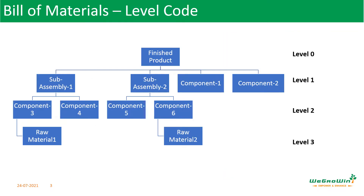We start our discussion with what is the level code in bill of materials. Here we can see that any product starts at level 0. The next level BOM is called level 1 BOM. For example, to produce a finished product, we need one sub-assembly, another sub-assembly, component 1, and component 2. These are the level 1 components required to produce the finished product.